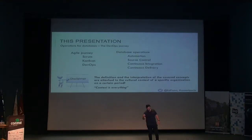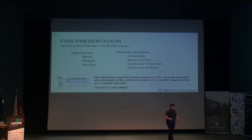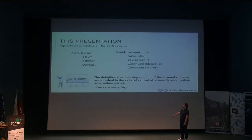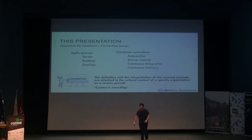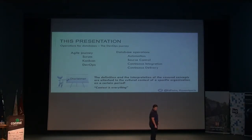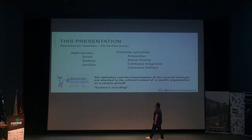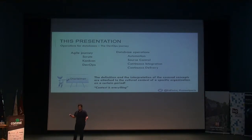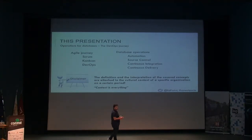This talk is a story that was my journey. Where we started, we went from Scrum, we went from Kanban, until we reached what we thought was the best approach for us. So we will talk about automation, source control, continuous integration, and continuous delivery. But keep in mind — this is a journey that happened in a specific context, and the context is everything.